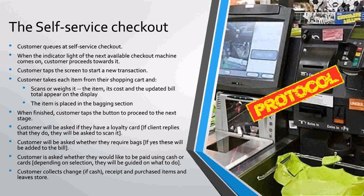If yes, one will be guided to scan the loyalty card for benefits or points. At the end, the machine will ask the person whether they need bags or have their own. Depending on the button pressed, the bill is adjusted accordingly. The final stage is that of paying. If one is using cash, they will be guided on how to proceed. If using a card, a different route will be taken. Once the transaction is complete, the person can then leave with their bag.